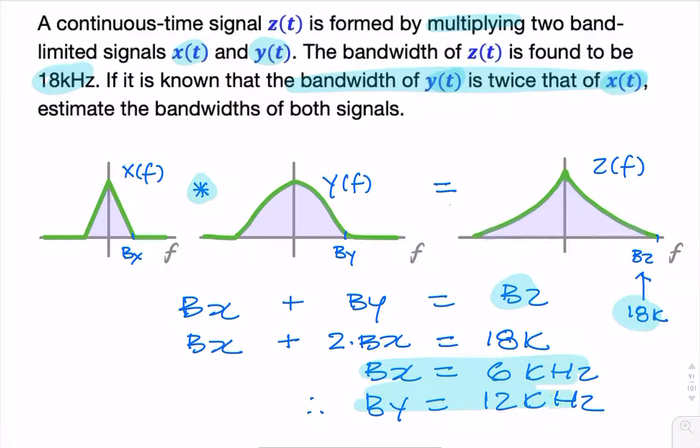That would be your final answer. The way we answered this is by remembering that when you multiply two signals in the time domain, the spectrum will have a bandwidth equal to the sum of the bandwidths of the individual components. If the answers were required in radians per second, you'd multiply by 2pi.